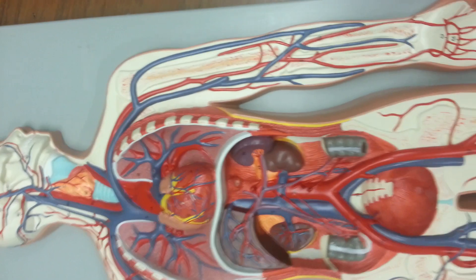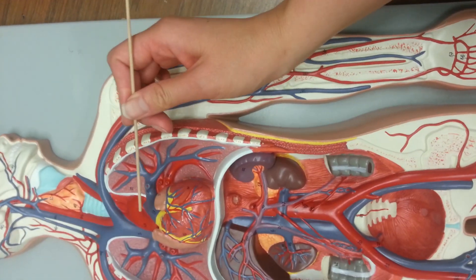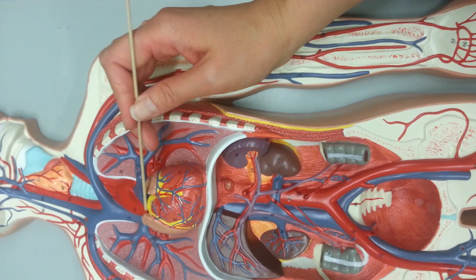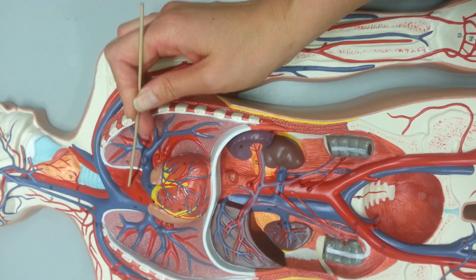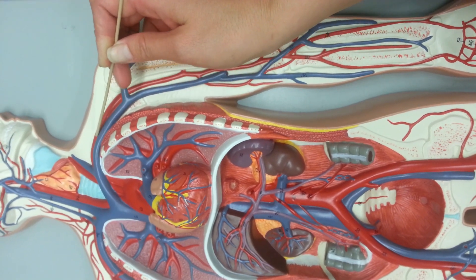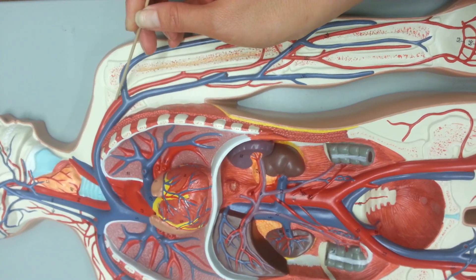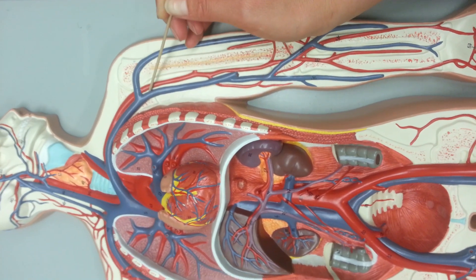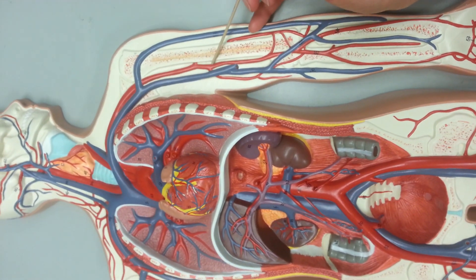Now if we go to the left upper limb, we actually do not need to use the brachiocephalic trunk. We're going to go up the aorta and the arch. We're going to go to the left subclavian artery, which goes underneath the clavicle. Then once we reach the humerus bone right here, we're at the axillary artery, and then finally on down to the brachial artery.